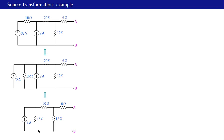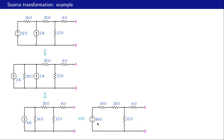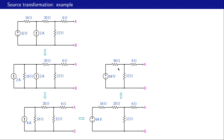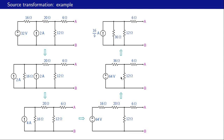Next we convert the Norton form — four amps in parallel with sixteen ohms — into its Thevenin equivalent. Here v-th equals i-n times r-n, which is four times sixteen giving sixty-four volts, and r-th equals sixteen ohms. This gives sixty-four volts in series with sixteen ohms. The two resistances are then in series, giving sixteen plus twenty equals thirty-six ohms. We then convert this new Thevenin form into its Norton equivalent: i-n equals sixty-four divided by thirty-six, which is sixteen-ninths amperes, and r-n equals thirty-six ohms.